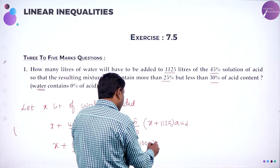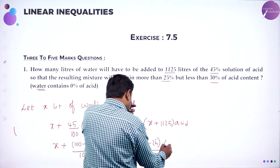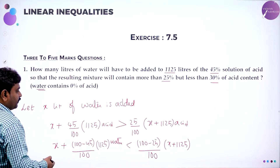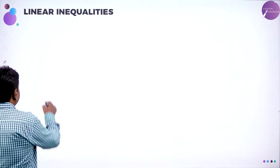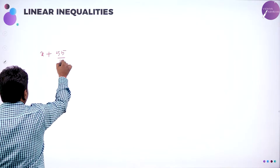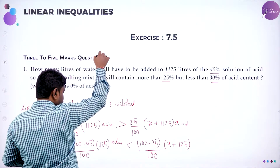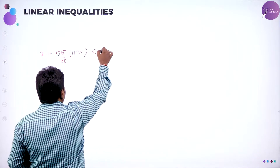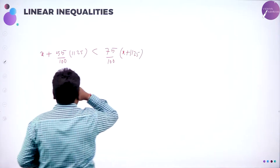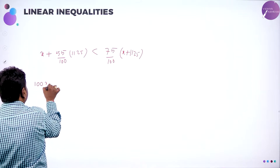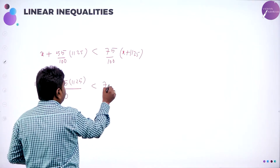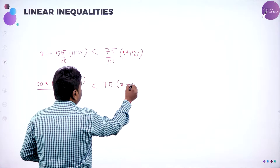And this will become: (100 minus 25) by 100 of (x plus 1125). So if you solve it, you will get the required value. That is: x plus 55% of 1125 is less than 75% of (x plus 1125). Now take LCM — 100 into x is 100x plus 55 into 1125, whole thing divided by 100, and left side is 75 into (x plus 1125).